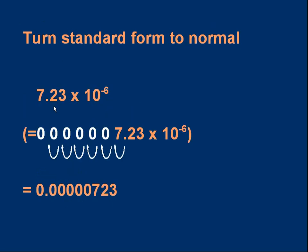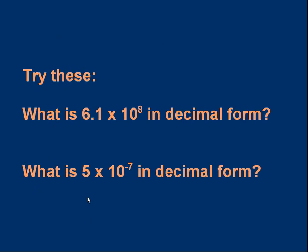How about 7.23 times 10 to the minus 6? This is the same kind of process. Multiplying by 10 to the minus 6 means dividing by 10 six times, so I move the decimal point six places to the left. Adding some leading zeros before the 7 and moving the decimal point six places gives us 0.00000723.